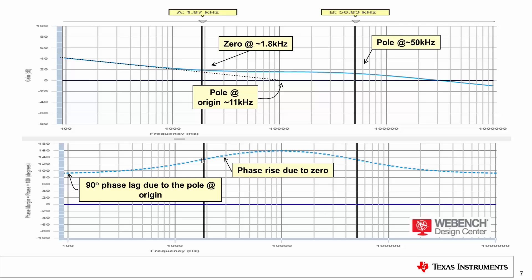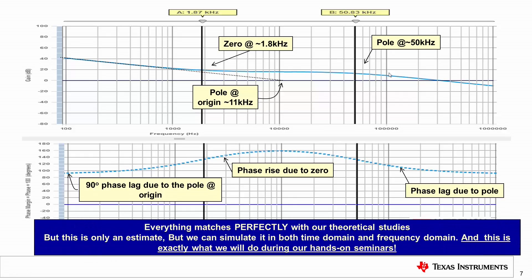And then finally, we had a pole at 50 kilohertz. And of course in school we study that the gain will fall with a pole. And also the phase would fall with a pole. And you can see here the phase lag due to the pole. And you can see the gain fall due to the pole. So everything matches perfectly with our theoretical studies.